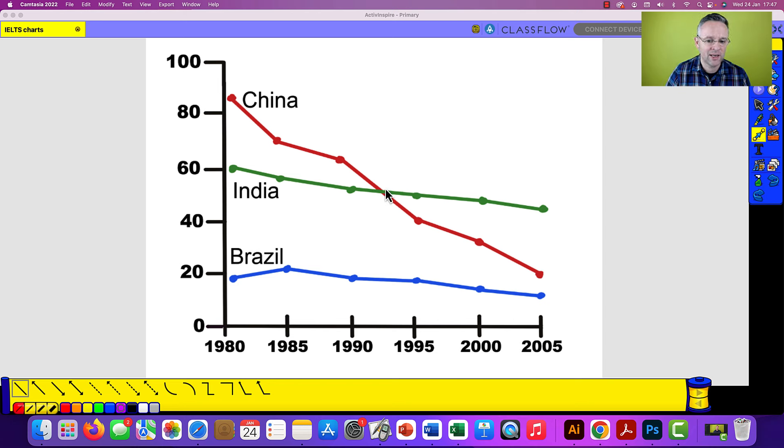And you can see there is a colour for each country. China is in red, India in green and Brazil in blue. So the percentage of people living on $1.25 or less in one day in China in 1980 is just under 90%, about 85%. And we can see the line is falling.